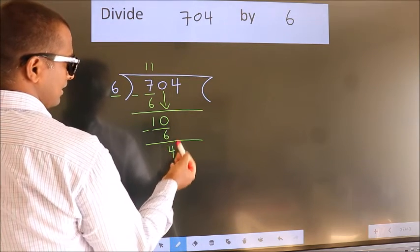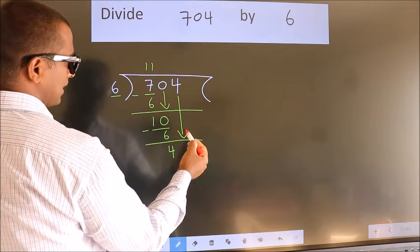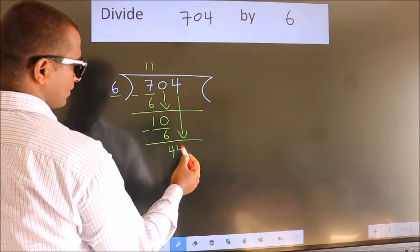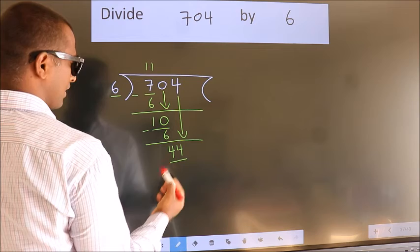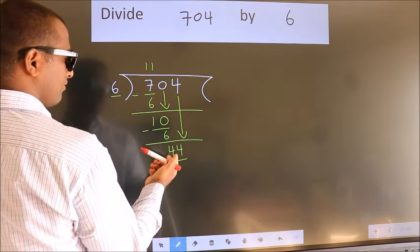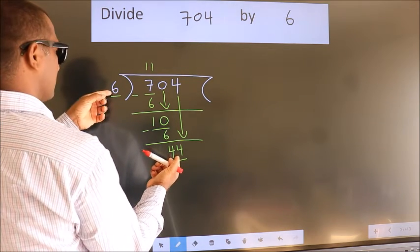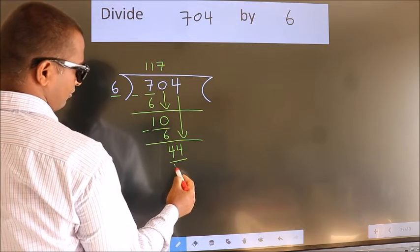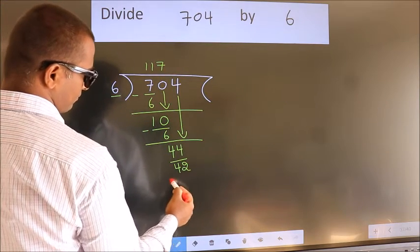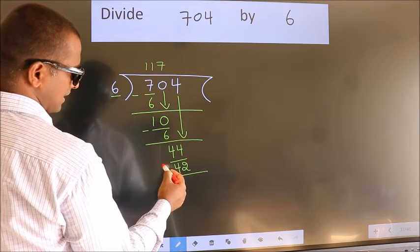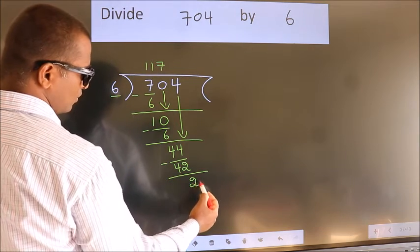After this, bring down the beside number. So, 4 down. So, 44. A number close to 44 in the 6 table is 6 sevens, 42. Now we subtract. We get 2.